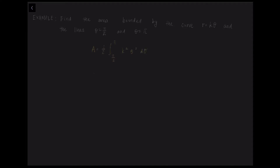We write down the formula: A equals half times the integral of r squared d theta, and r squared is k squared theta squared. After integrating, we obtain k squared over 2 times theta cubed over 3. Substituting the boundaries, we obtain a value of 7k squared times pi cubed over 48. That is the area of the given region.